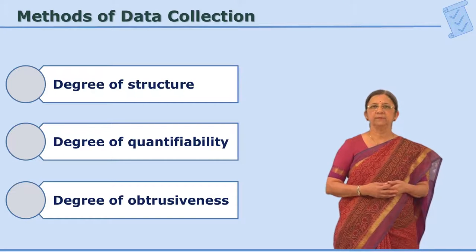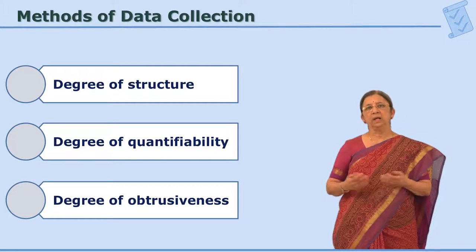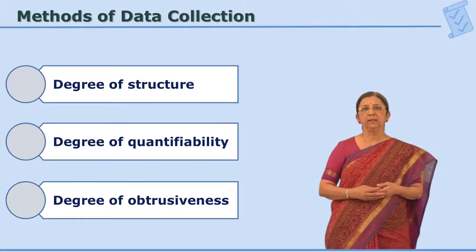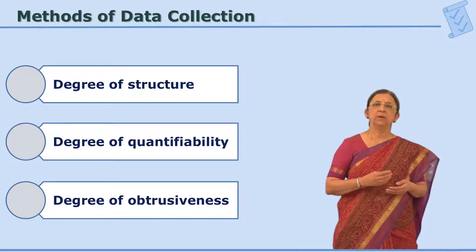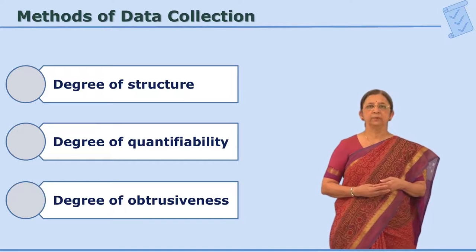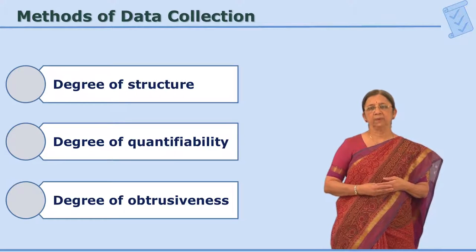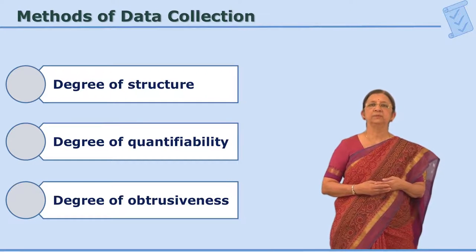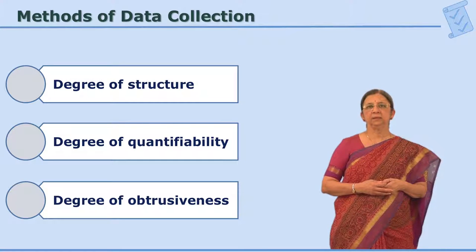There are two types of methodologies: quantitative methodology and qualitative methodology. Both differ in their process, in their data collection, in their way of analysis, and naturally in their use of statistical techniques. So the quantifiability of the data collection method matters. The third quality is degree of obtrusiveness — referring to the visibility or verifiability of the data. Some of these criteria must be kept in mind while selecting data collection methods.